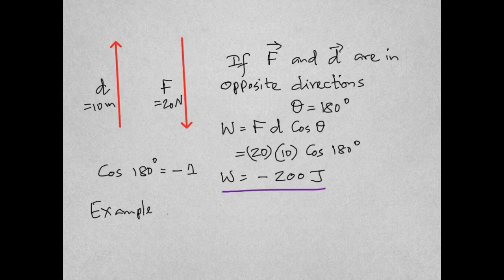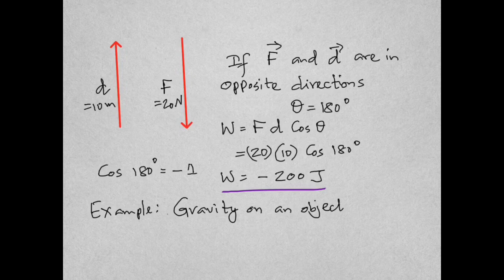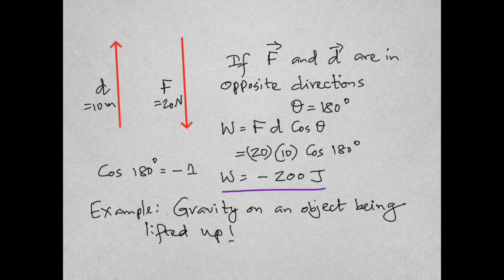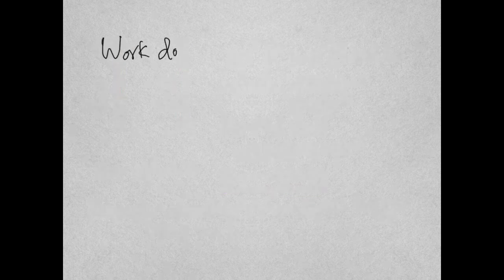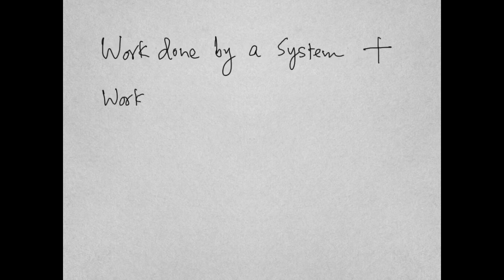Negative work always shows that we are working against something. For example, when you lift an object up, you're working against gravity. Or if you move something on the floor, you are working against friction. In both of these cases, the work would be negative. Work done on a system would be negative, and work done by a system would be positive.